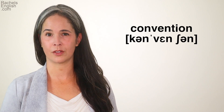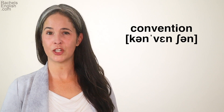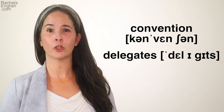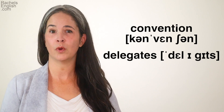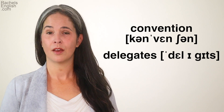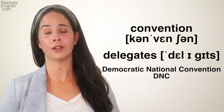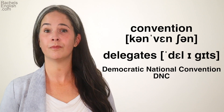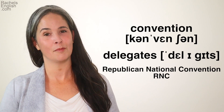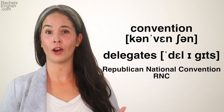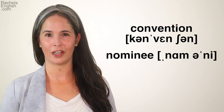After the primary elections, a convention is held by each party to officially nominate the winner. Each state sends delegates — people chosen to vote according to how the people of their state voted. If Biden won the primary in a particular state, that state's delegates would vote for Biden at the convention. The Democrats have the Democratic National Convention, also called the DNC, and the Republicans have the Republican National Convention, more commonly referred to as the RNC. They name the nominee, and then the real campaigning starts for the general election.